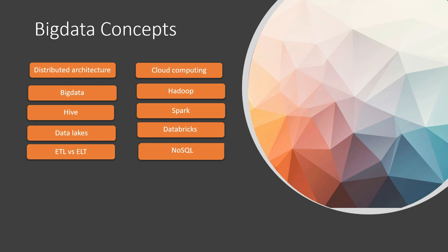Another important concept is ELT versus ETL. We have been using ETL for a long time, but in the big data world we say ELT. This comes down to schema on read versus schema on write — a very important concept to understand, and a key benefit that big data systems offer. Orchestration is also important: once you understand ETL pipelines and data lakes, you need to know how jobs would be orchestrated, what tools are available, and how to schedule those jobs. Security is also fundamental — authentication, authorization, encryption, and masking are all important for any data platform.